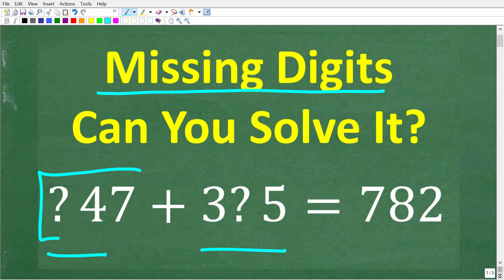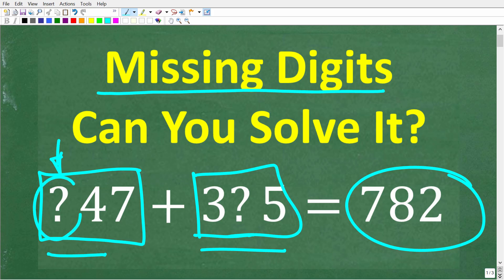So we have two three-digit numbers and we're adding them together and the correct answer here is 782. But our first number, we don't know the first digit and our second number, we don't know the middle digit. So the question here is find the value of these digits.